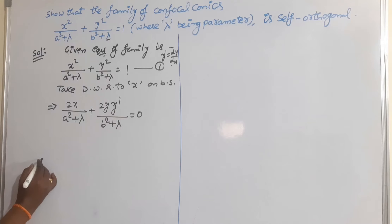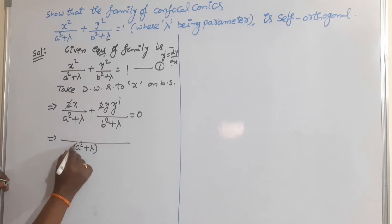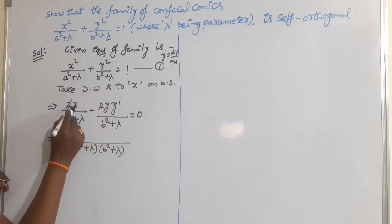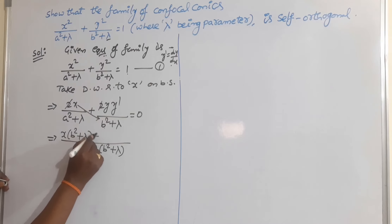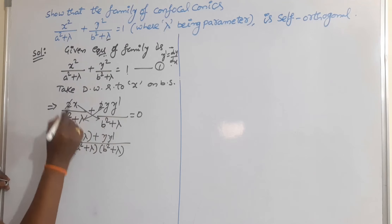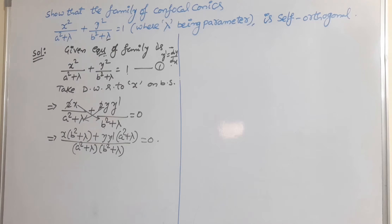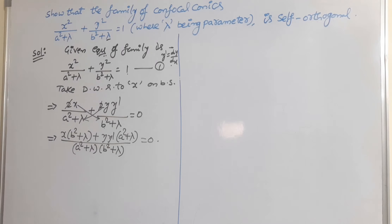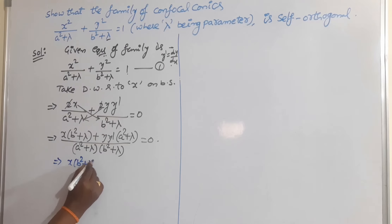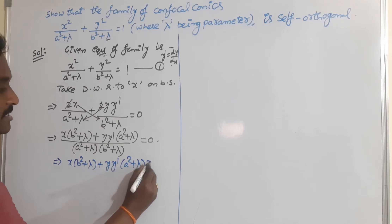The 2's cancel. Taking LCM as (a²+λ)(b²+λ), we get: x·(b²+λ) + y·y'·(a²+λ) = 0. Transforming the denominator to the right side, since the right side is 0, multiplying gives: x·(b²+λ) + y·y'·(a²+λ) = 0.